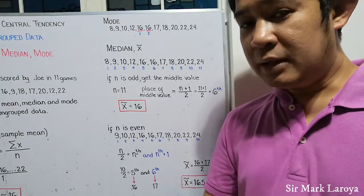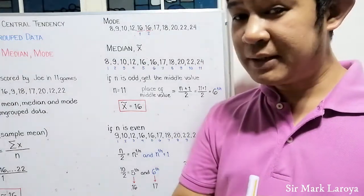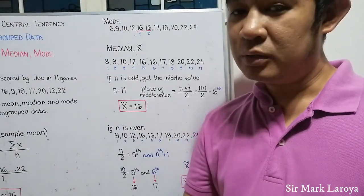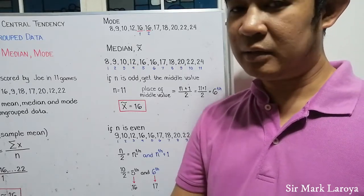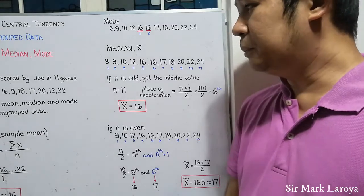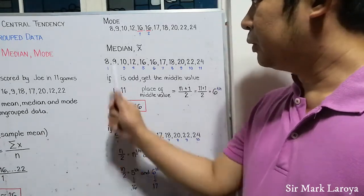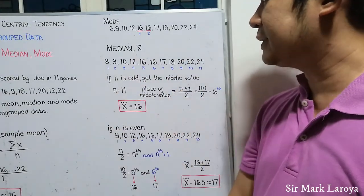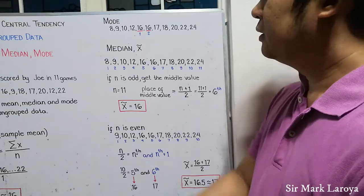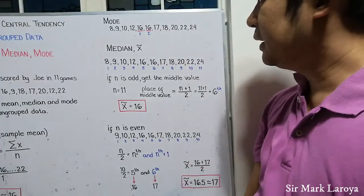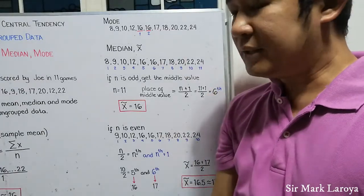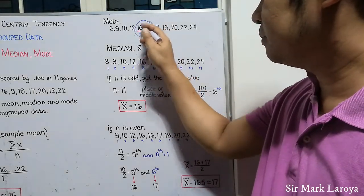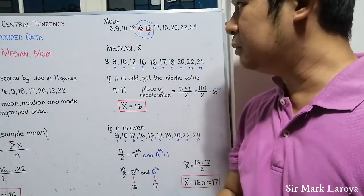Now, another way of getting a single value that could describe and represent a set of data would be with the use of mode. Mode is the value that occurs most often in the dataset. For example, first I arranged the points scored by Joe in 11 games from lowest to highest. You can also do it the other way around from highest to lowest. Here, we can see that 16 occurs twice and it has the most number of frequency so we can say that the mode of our dataset is 16. And that is how we get the mode of a dataset.